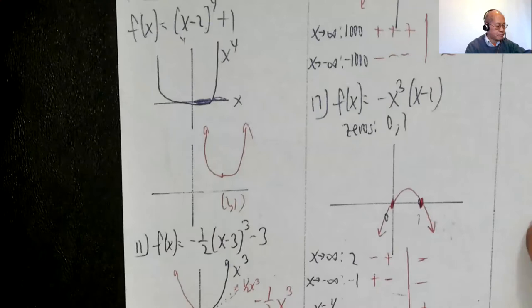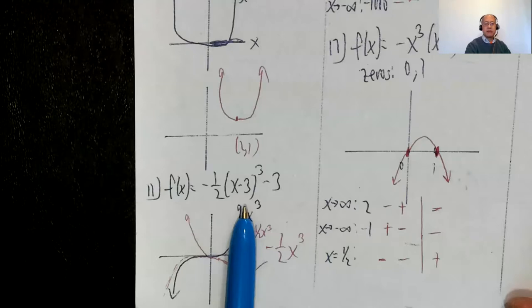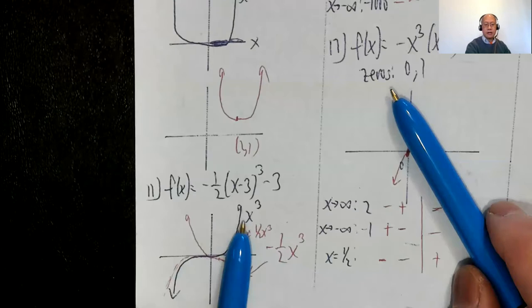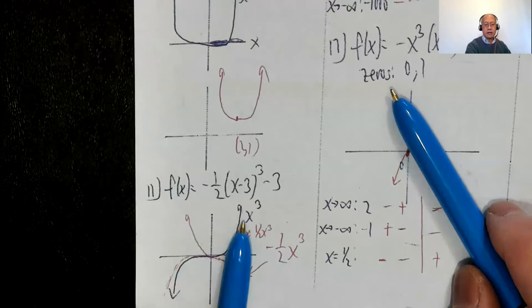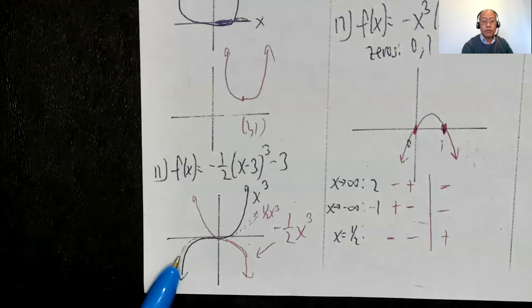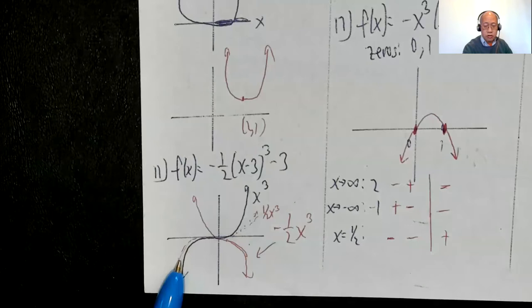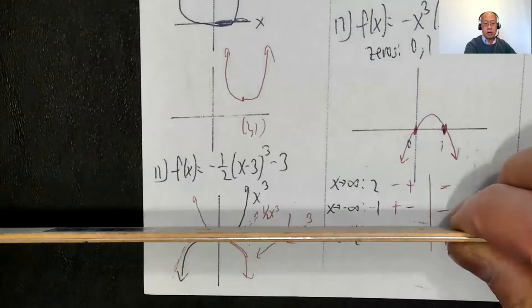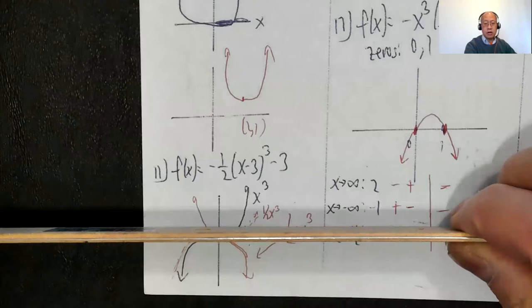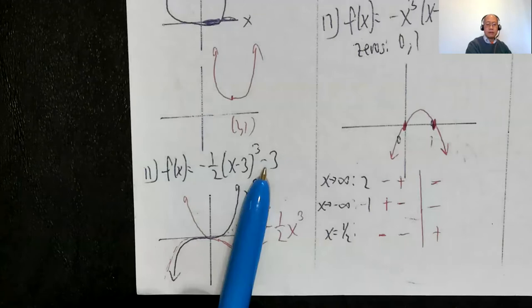Problem 11: f(x) = -½(x-3)³ - 3. Start with x cubed. Then ½x cubed is a vertical shrink — it doesn't go up as fast. Negative ½x cubed reflects across the x-axis, so it flips. Then we shift three to the right and three down, moving the inflection point from (0,0) to (3,-3), giving a rough sketch of the transformed cubic.